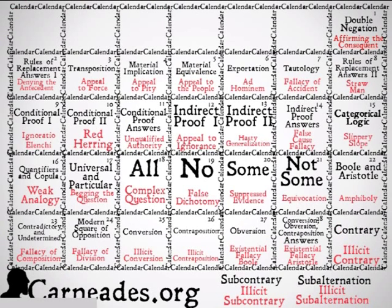Take a look — here's the calendar. The names in red are the fallacies that we're going to be covering, and the names in black are the continuation of the normal 100 Days of Logic.